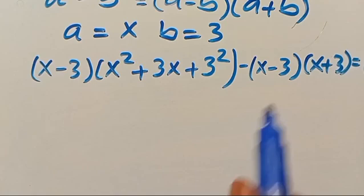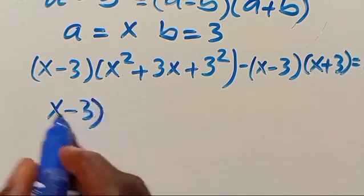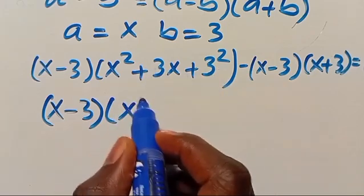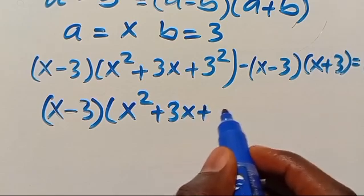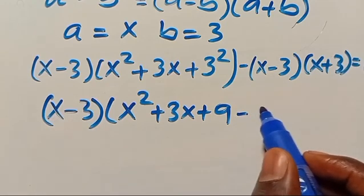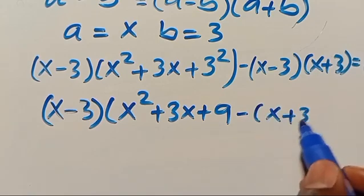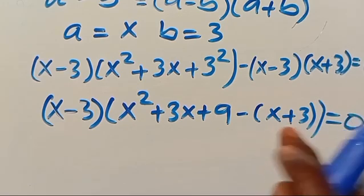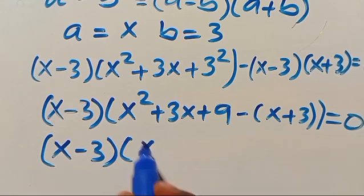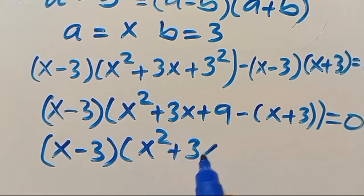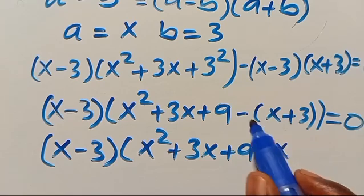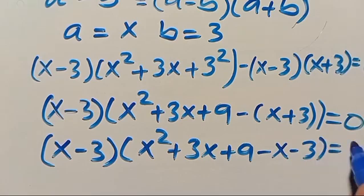We have x minus 3 in common, so let's factor it out. Factoring x minus 3, we get x squared plus 3x plus 9, divided by x minus 3, leaves x squared plus 3x plus 9. And the second part gives minus x plus 3, equals zero. Expanding: x minus 3 times x squared plus 3x plus 9 minus x minus 3 gives x squared minus x plus 3x equals plus 2x, and 9 minus 3 equals plus 6, still equals zero.